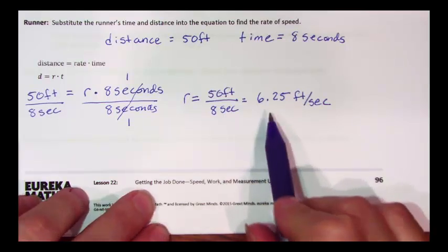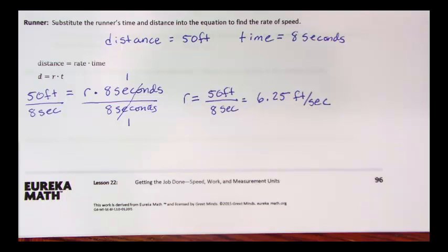These two cross out because they're exactly the same. A number divided by itself gives us 1. And we have R, our rate, equals 50 feet divided by 8 seconds, which gives us 6.25 feet per second. The rate for our runner was 6 and a quarter feet in 1 second. The rate for our walker was a little more than 4 feet in 1 second. As we expect, the runner went faster.